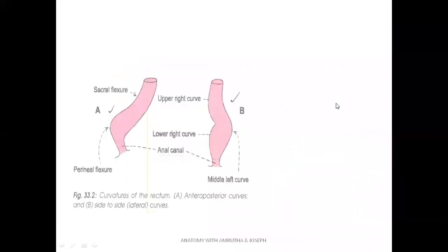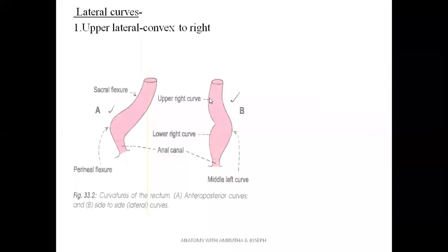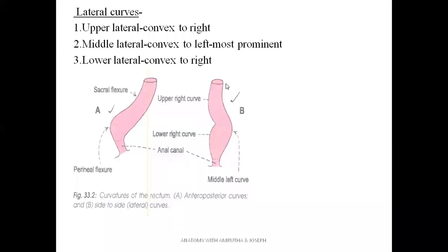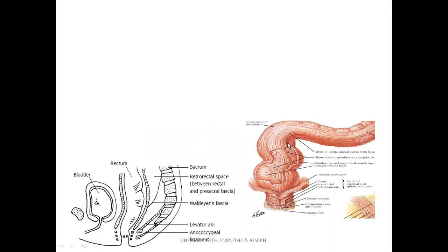The upper lateral curvature has convexity towards the right. The most prominent curve is the middle lateral curvature towards the left, and the lower lateral curvature is towards the right. In this picture, we are seeing the anterior aspect of the rectum; posterior is behind, and the right and left sides are shown. There are three lateral curvatures, which are very clear from this diagram.